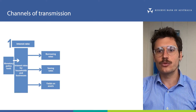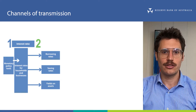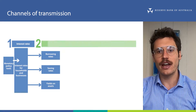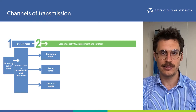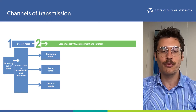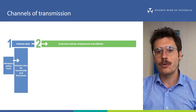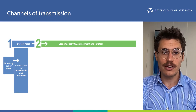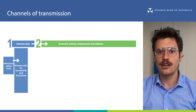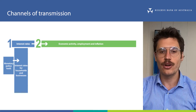The next few videos will talk about the second step of monetary policy transmission: how changes in interest rates affect the behaviour of households, businesses and governments in Australia and overseas, and as a result the performance of Australia's economy. When we think about how changes in interest rates affect the behaviour of households, businesses and governments, we usually talk about different channels of transmission.